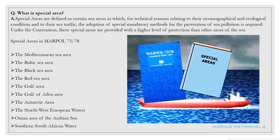The next question is: what is a special area? Special areas are defined as certain areas in which, for technical reasons relating to their oceanographical and ecological conditions and to their sea traffic, the adoption of special mandatory methods for the prevention of sea pollution is required. Under the Convention, these special areas are provided with a higher level of protection than other areas of the sea. Special areas in MARPOL 73/78 are: the Mediterranean Sea Area, the Baltic Sea Area, the Black Sea Area, the Red Sea Area, the Gulf Area, the Gulf of Aden Area, the Antarctic Area, the Northwest European Waters, the Oman Area of the Arabian Sea, and the Southern South African Waters.